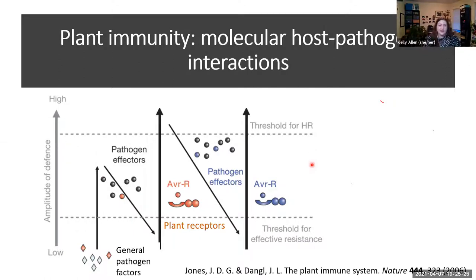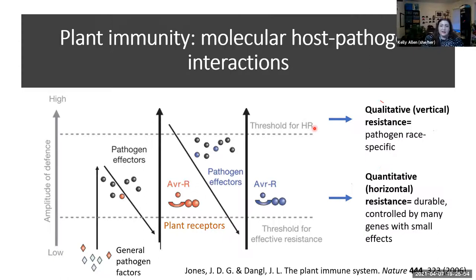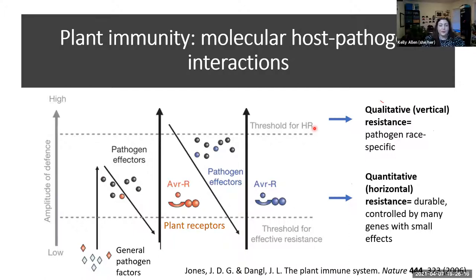There are two general kinds of plant resistance to pathogens. One is called qualitative or vertical resistance — this is when you have a single resistance gene that recognizes the pathogen effector and results in a cell death response called HR, or hypersensitive response, which effectively walls off the pathogen and keeps it from spreading. The other kind is quantitative or horizontal resistance, which is thought to be more durable. It's controlled by many genes with small effects that add up to a resistant plant. We have to know a little bit about this to understand why we would even breed plants that have disease resistance.